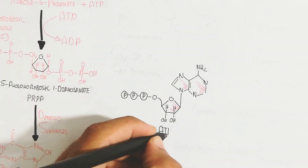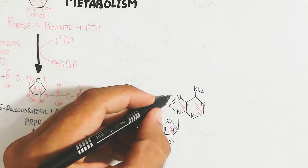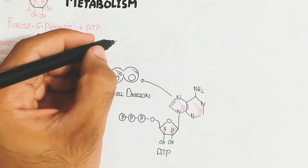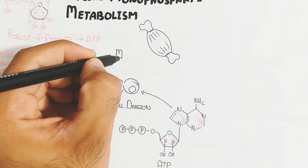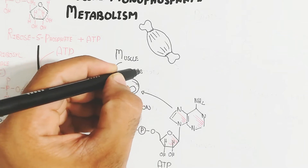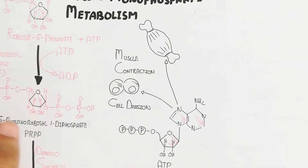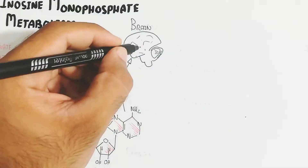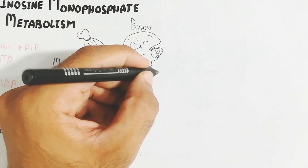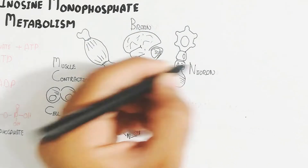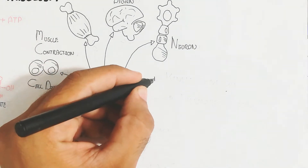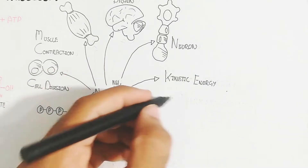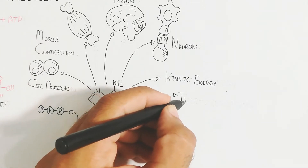ATP is the primary energy currency throughout the body, functioning in cell division, muscle contraction, brain function, and neuron action potentials. Energy is provided through mitochondria — the powerhouse of the cell — as well as through glycolysis. ATP also supports active transport and thermoregulation.